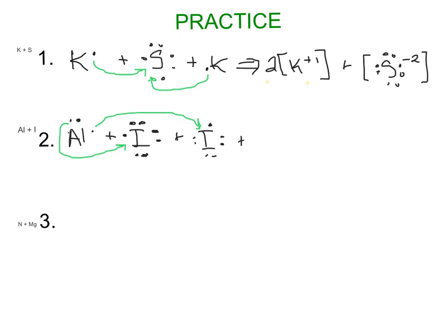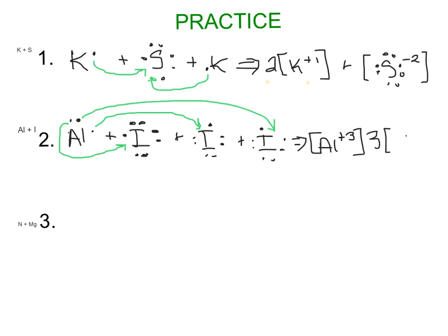So we draw a third iodine with seven valence electrons and draw the last electron from aluminum over to it. Now aluminum is stable — it has lost all three of its valence electrons, and all three iodines each gained one. The ratio is one aluminum, which became +3, with three iodines, each gaining one electron for a −1 charge.